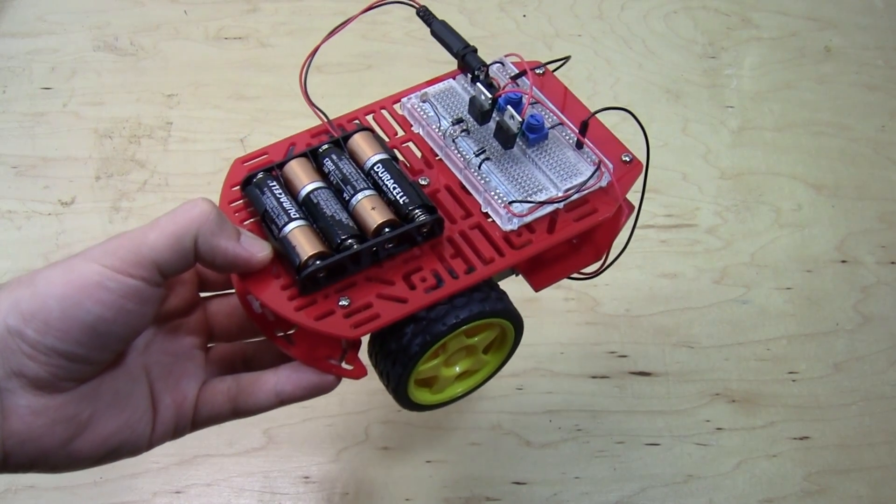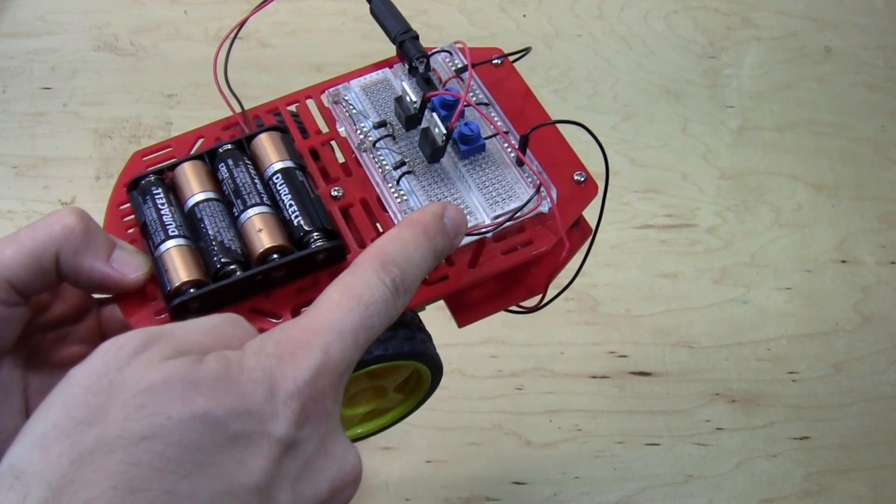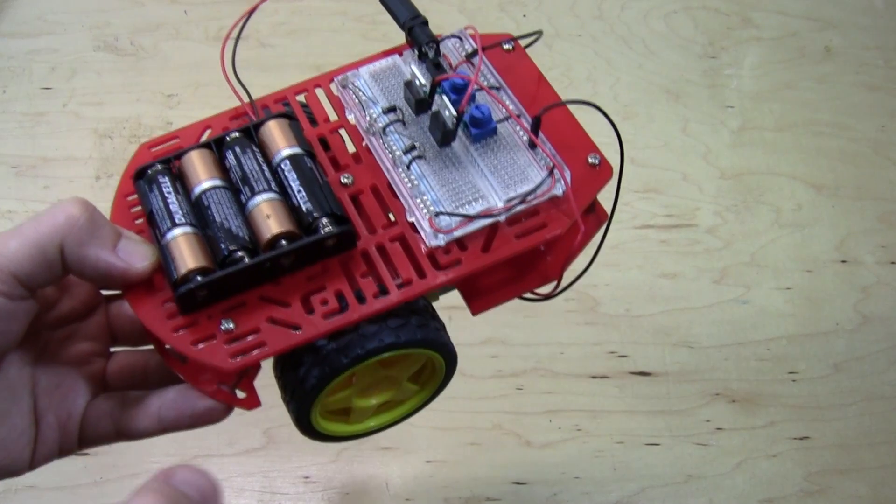On the top of the robot, we have a battery pack and a breadboard with a circuit on it. You don't need to worry about exactly how the circuit works right now, we'll get to that later.